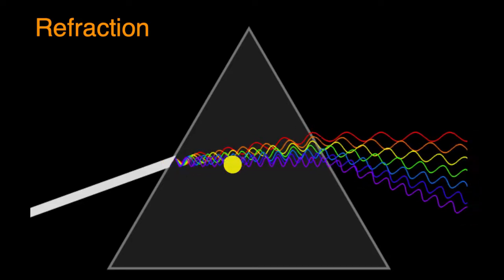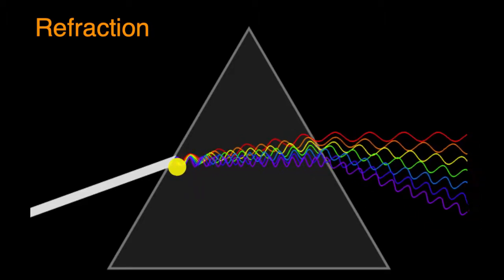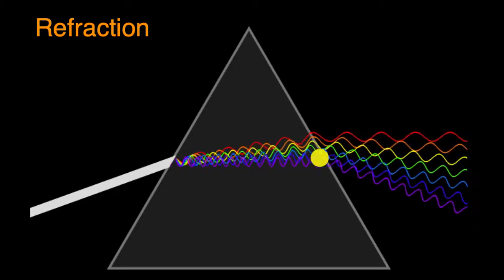Now, if you were to look at this with your eyes, you wouldn't be able to see the actual waves like we're seeing in this diagram right over here. You would just see how your brain or how your mind perceives the various frequencies.